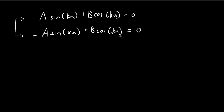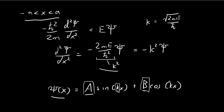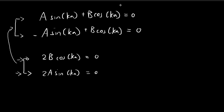A cleaner way to express these requirements: adding the two equations gives 2B·cos(ka) = 0, and subtracting them gives 2A·sin(ka) = 0. Now we need to find constants A, B, and k such that both of these conditions are satisfied. If both expressions equal zero, the boundary conditions are met and our ψ(x) will be valid and continuous at the endpoints.